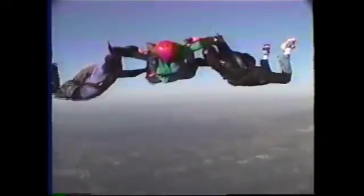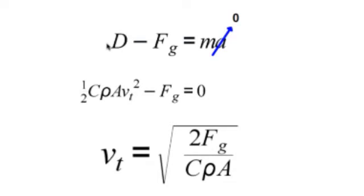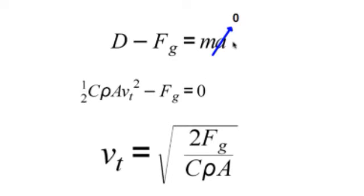For the laid-out skydiver, terminal velocity is about 120 miles per hour. We start with the sum of the forces in the vertical direction: drag minus the force of gravity. At terminal velocity the acceleration is zero because these forces equal each other, so I set it equal to zero. I replace drag with the expression we have for drag, and solve the equation for the velocity — which is, in this case, the terminal velocity — and arrive at this expression for terminal velocity.